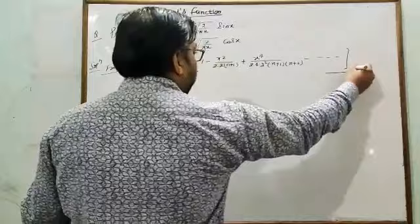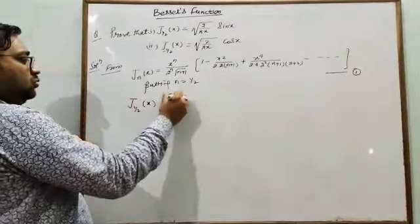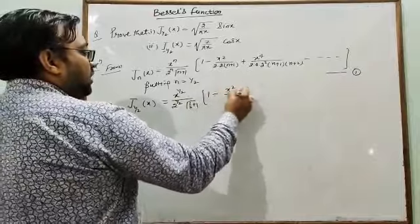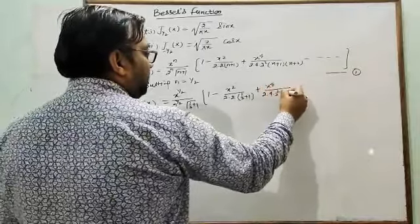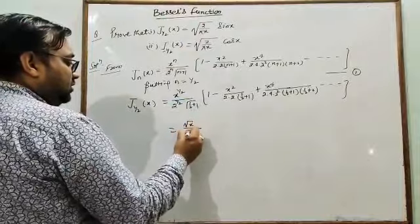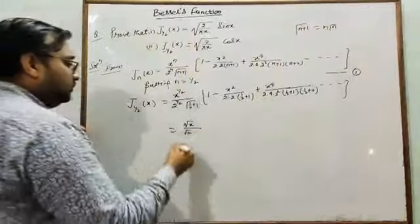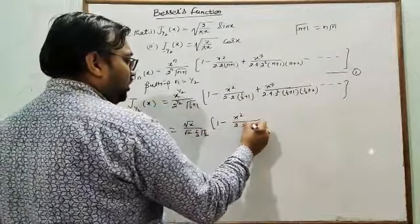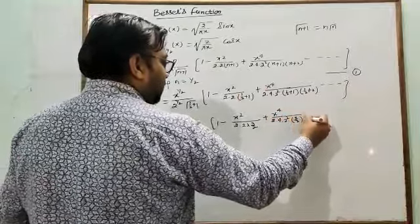Now putting n = 1/2 in equation (1): J_{1/2}(x) = x^{1/2} / (2^{1/2} · Γ(1/2 + 1)) · [1 − x²/(2·2·(3/2)) + x⁴/(2·4·(3/2)·(5/2)) − ···]. Using the property Γ(n+1) = n·Γ(n), Γ(3/2) = (1/2)·Γ(1/2), so Γ(1/2 + 1) is replaced by (1/2)·Γ(1/2).